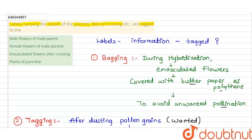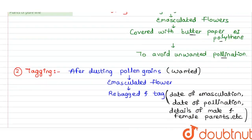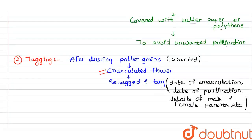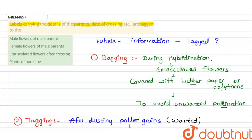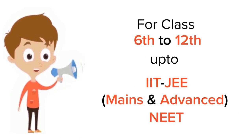The question asks which flower carries the label with parent details and date of crossing. As explained, it is the emasculated flower — the one we bag and tag. After the dusting of pollen grains (crossing), we write all the information about parent details and dates. Therefore, the correct answer is the third option: emasculated flower after crossing.